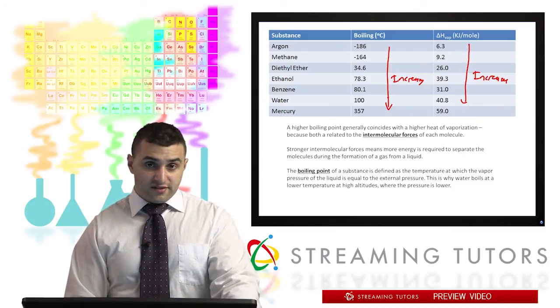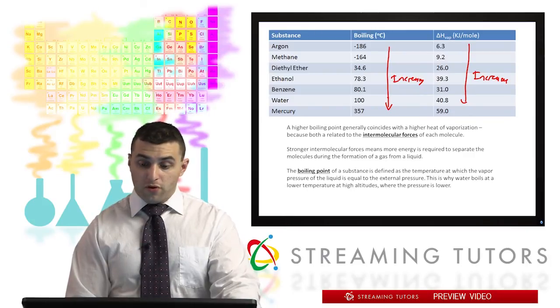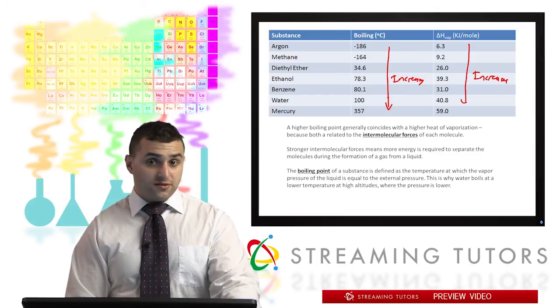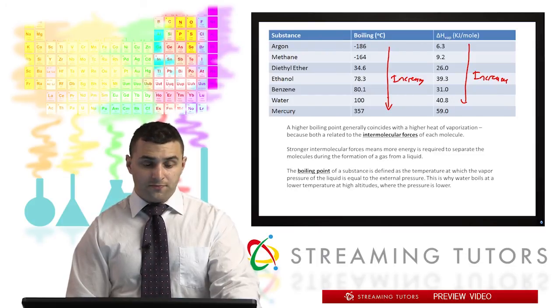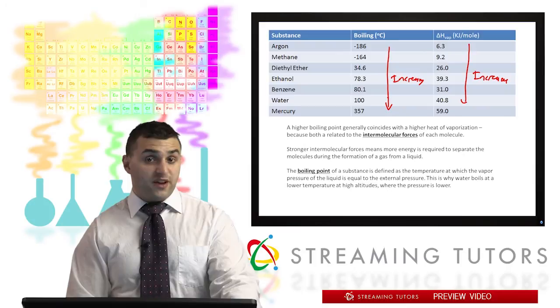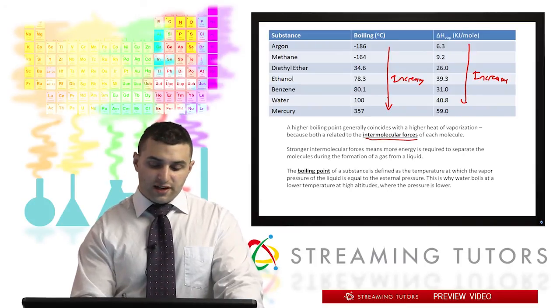So that kind of makes sense. If a substance requires more energy to convert it from a liquid to a gas, we can also assume that's going to imply a higher temperature too. But what is it about the substances that gives rise to these different boiling points and vaporization enthalpies? The answer to that is in its intermolecular forces.